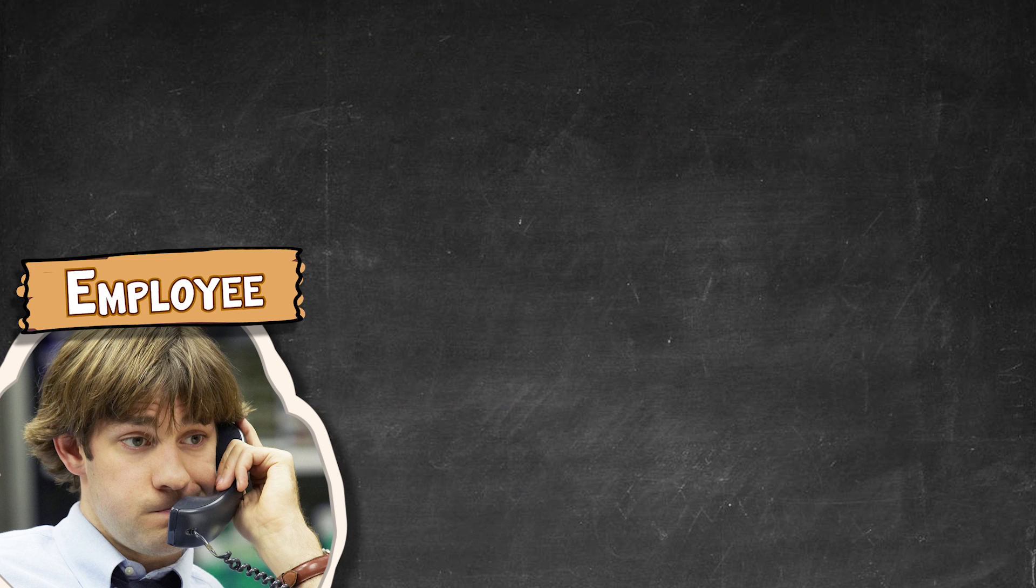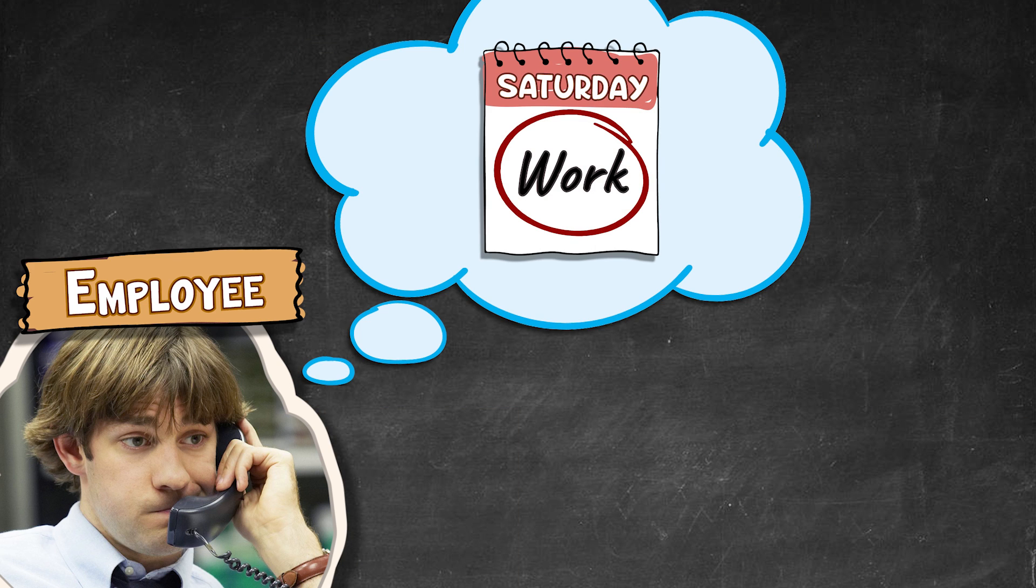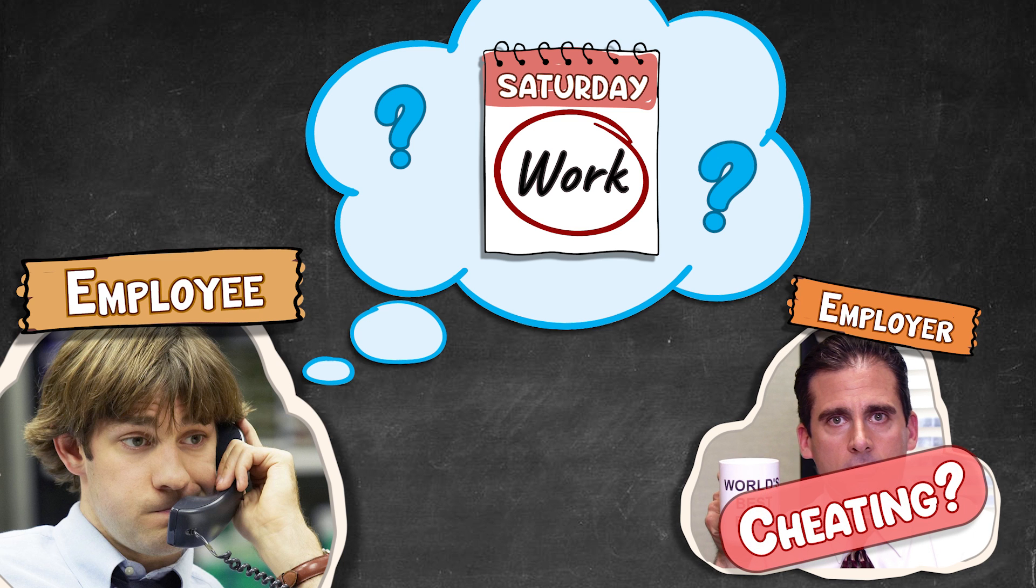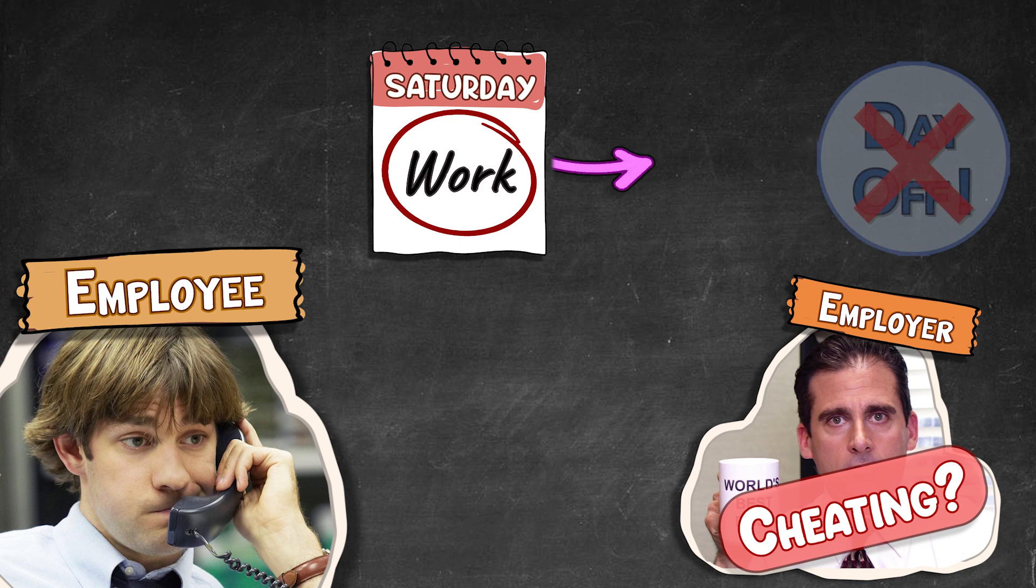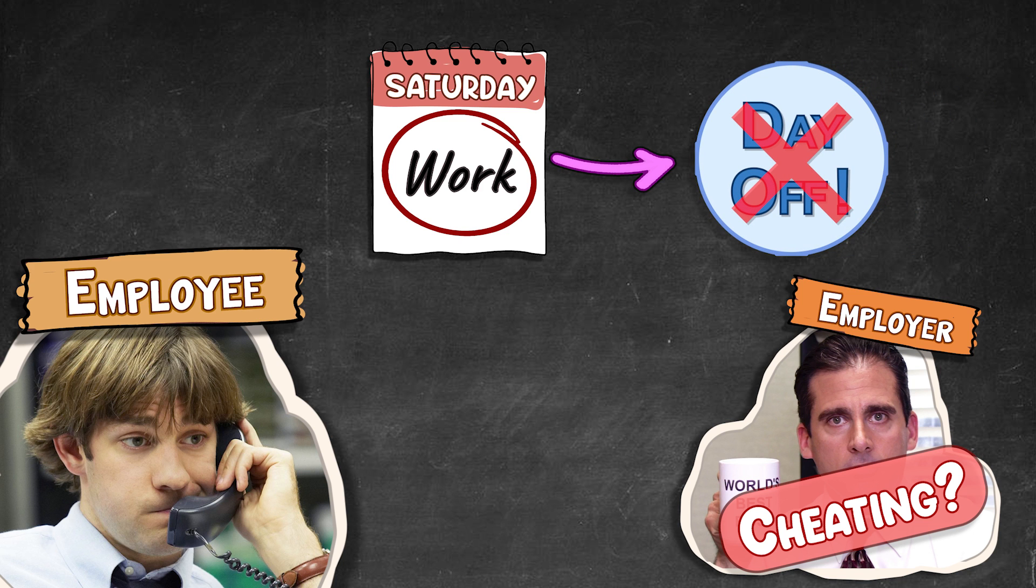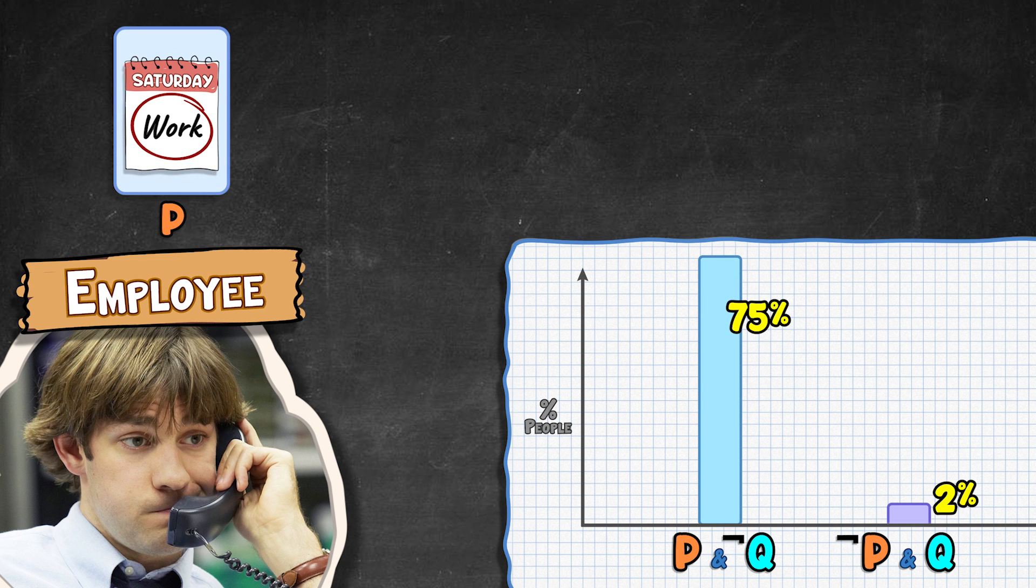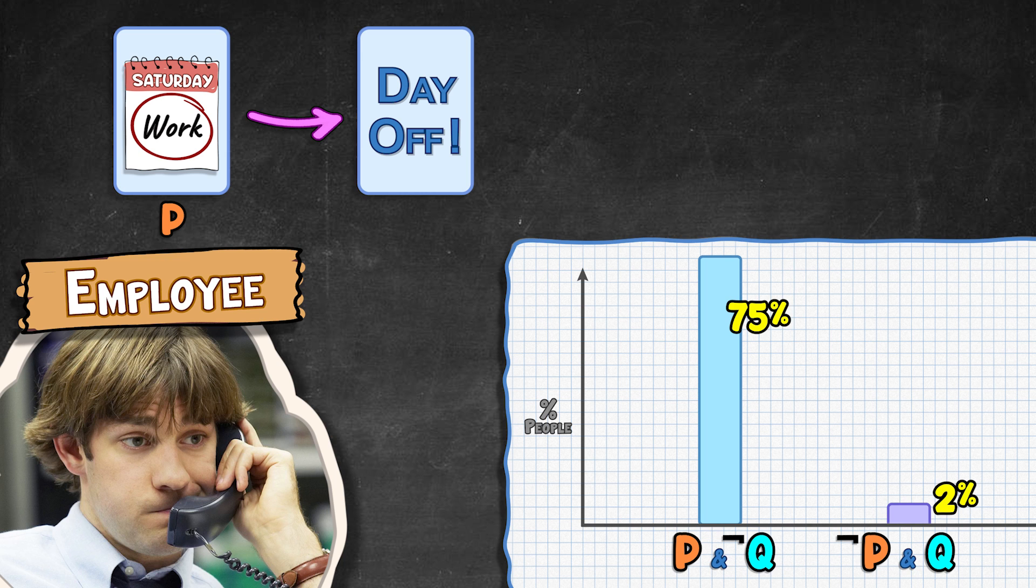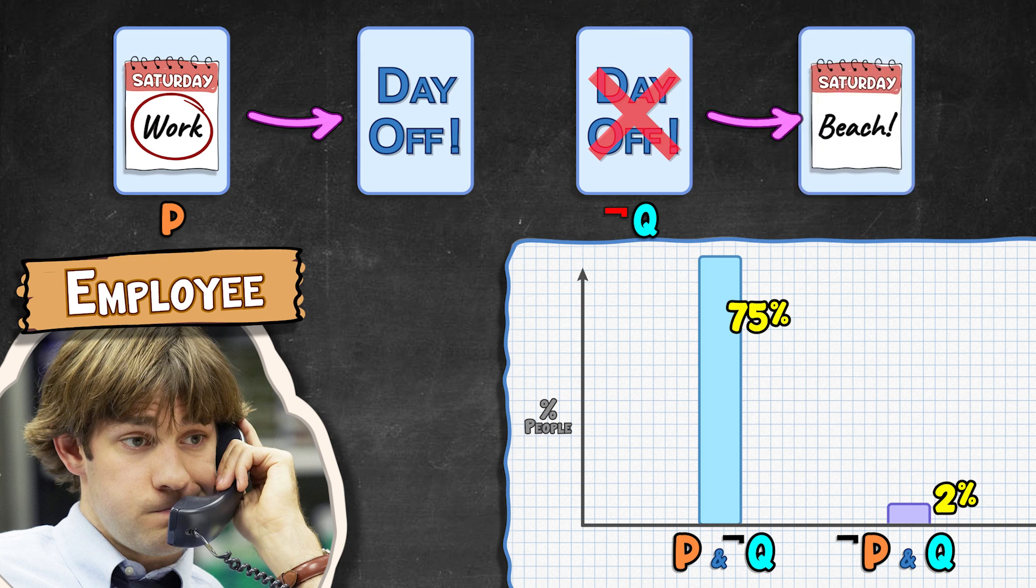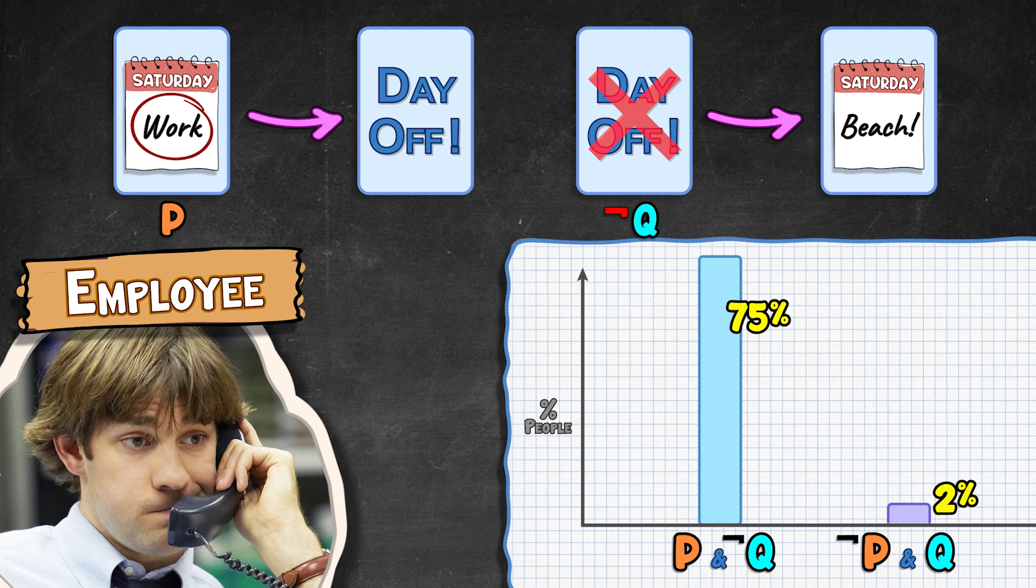As an employee, they are told they are considering working on the weekend, but I've heard that the company perhaps might not be holding up their end of the bargain, not actually giving people who work on the weekend the day off. With this perspective, most people choose to flip over the P card to verify people who work on the weekend do get the day off, and flip over the not Q card to verify people who did not get a day off also did not work the weekend day. In other words, the correct logical answer.